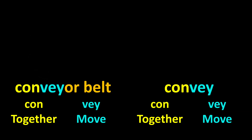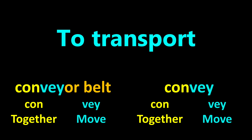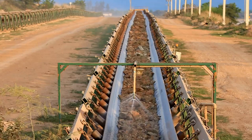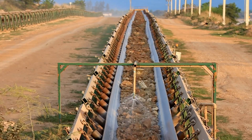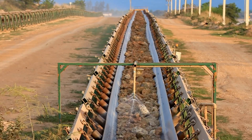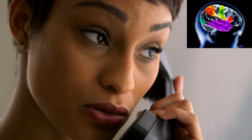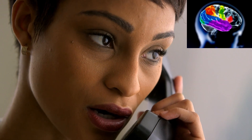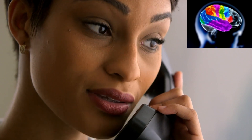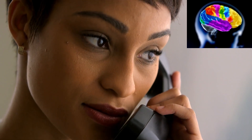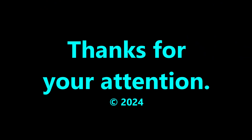The words 'convey' and 'conveyor belt' may seem very different, yet they both have the same word parts. Here's one way to see how they're similar: both mean to transport. A conveyor belt transports objects or people from one place to another. When we communicate, it's like we are transporting our thoughts from one person to another — at least in the sense that we're sharing our thoughts. Thanks for your attention.